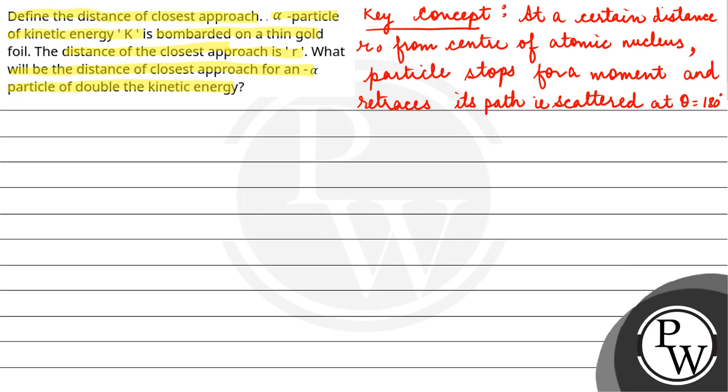So if this is the atomic nucleus and let's say an alpha particle is approaching, because your alpha particle is positive and nucleus is positive, it will stop from the center of the atomic nucleus at a certain distance. This distance is known as, if we measure from the center of atomic nucleus, the distance of closest approach. The alpha particle will stop for a moment and retrace its original path.